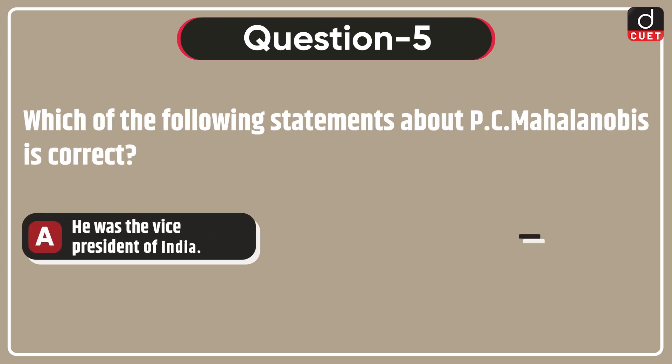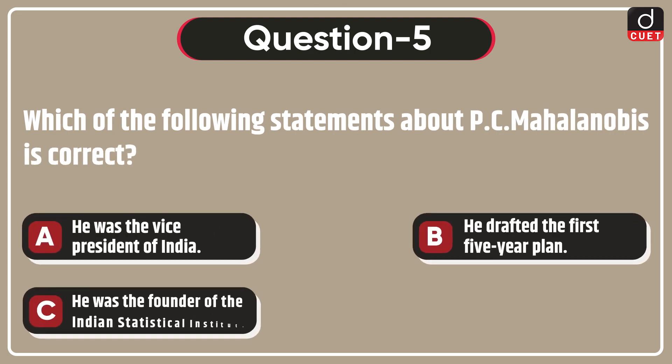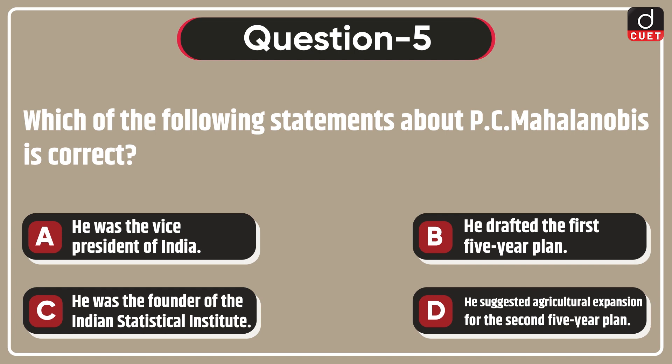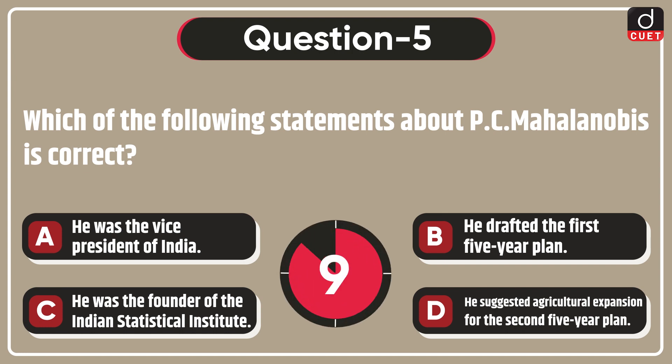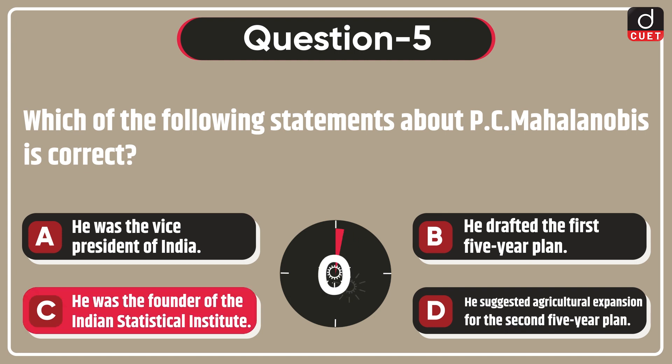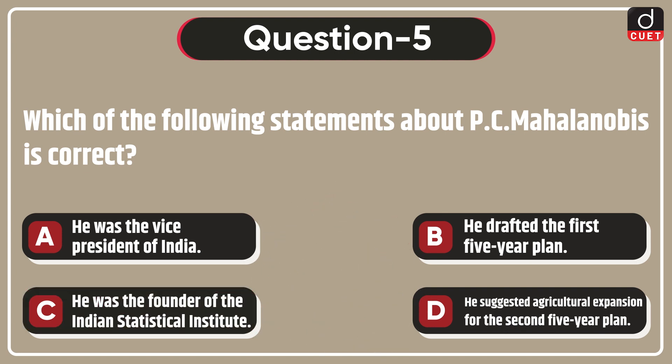Next question is, which of the following statements about PC Mahalanobis is correct? He was the vice president of India, he drafted the first five-year plan, he was the founder of the Indian Statistical Institute, or he suggested agricultural expansion for the second five-year plan? The correct answer is option C, he was the founder of the Indian Statistical Institute.